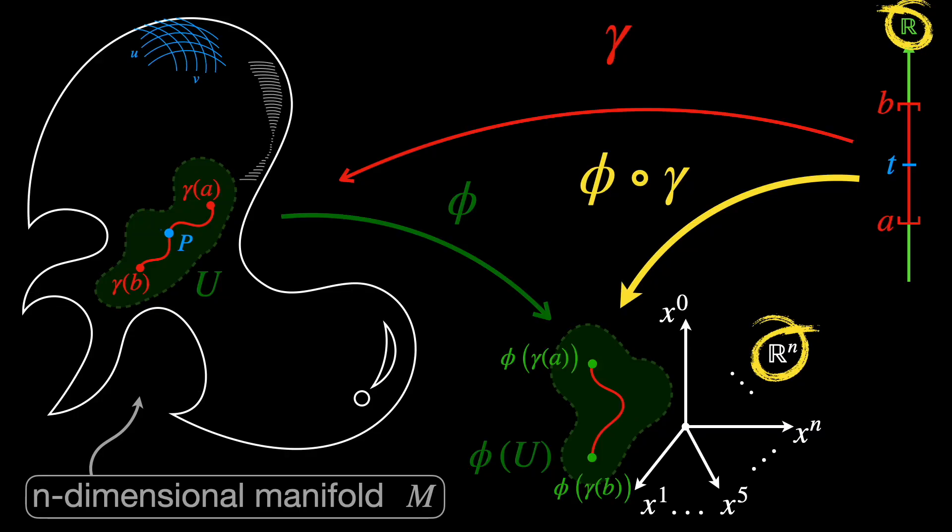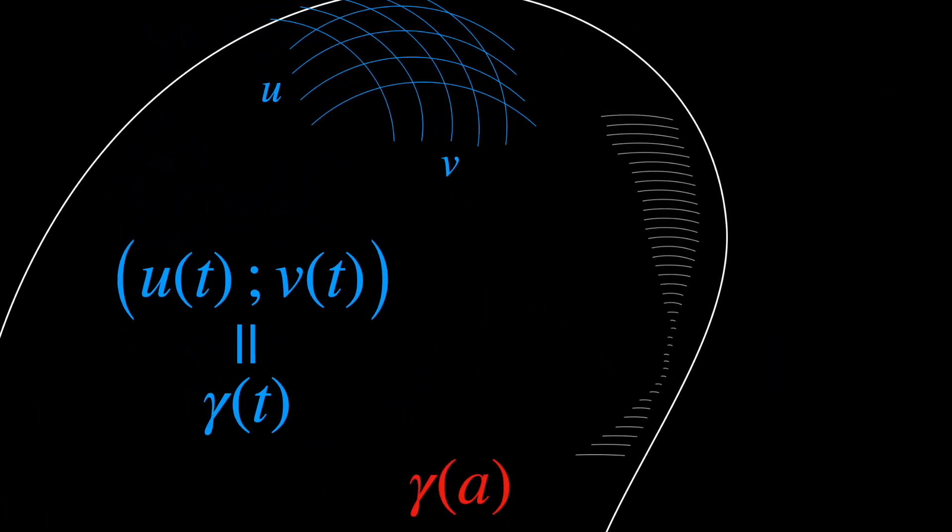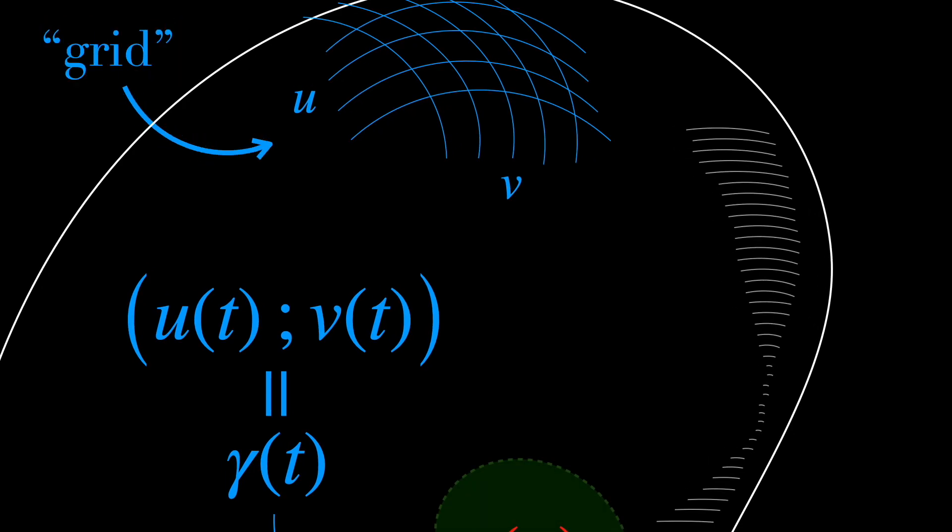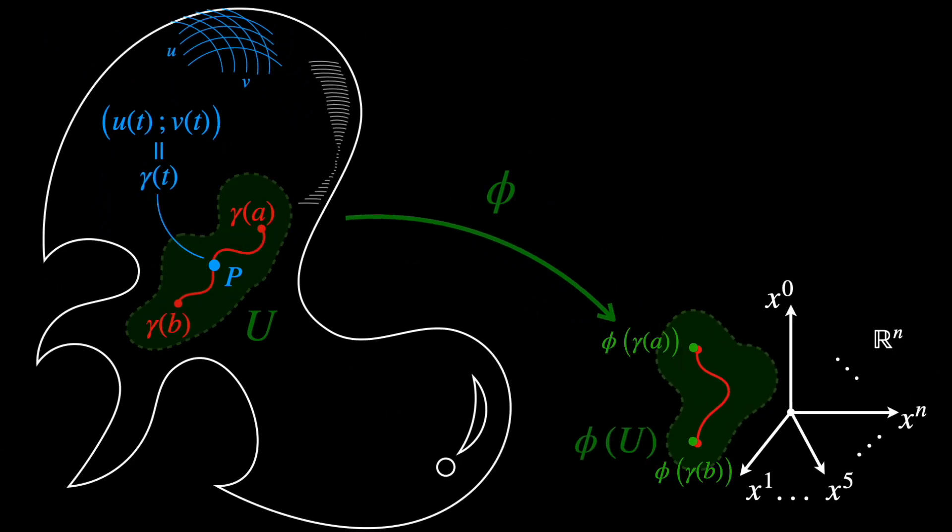The manifold M cannot be described using the traditional X, Y, and Z, so the Euclidean coordinates, because it's not necessarily embedded in Rn. So, we need to define instead intrinsic coordinates, which will serve as a sort of grid used to measure distances in M. Actually, in order to measure distances, a metric must be defined. And by the way, when applying this to general relativity, the metric is usually defined as G, and it describes gravity on the manifold.